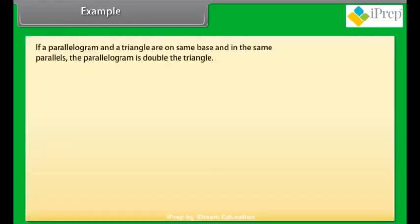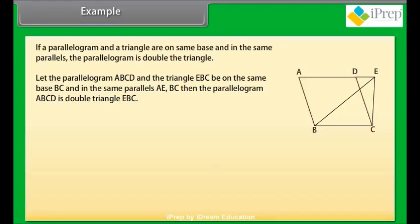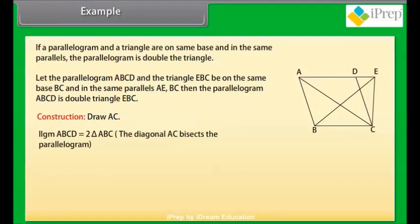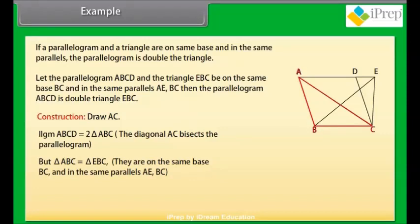Example: If a parallelogram and a triangle are on the same base and between the same parallels, the parallelogram is double the triangle. Let parallelogram ABCD and triangle EBC be on the same base BC and between the same parallels AE and BC. Construction: draw AC. Since AC bisects the parallelogram, parallelogram ABCD is double triangle ABC. But triangle ABC equals triangle EBC because they are on the same base BC and between the same parallels AE and BC. Therefore, parallelogram ABCD is also double triangle EBC. Hence proved.